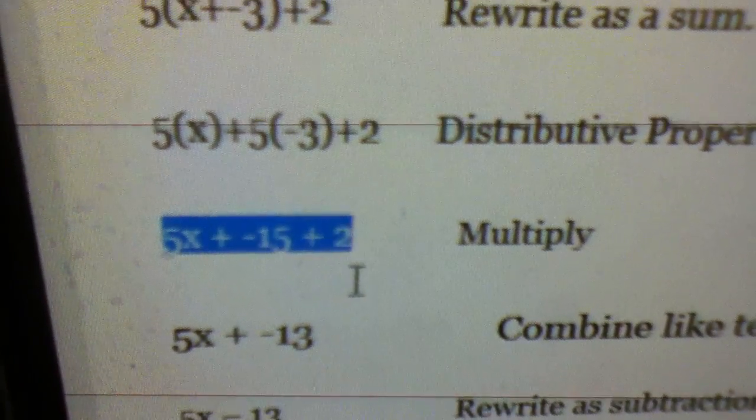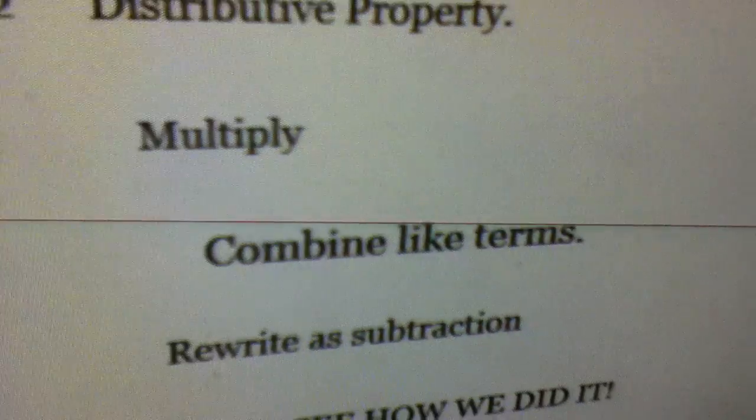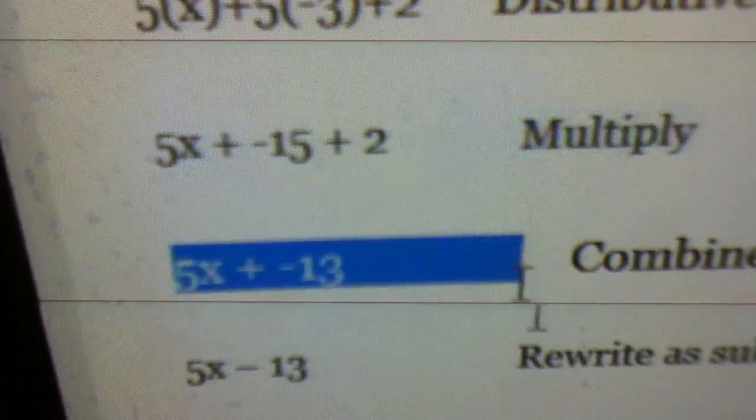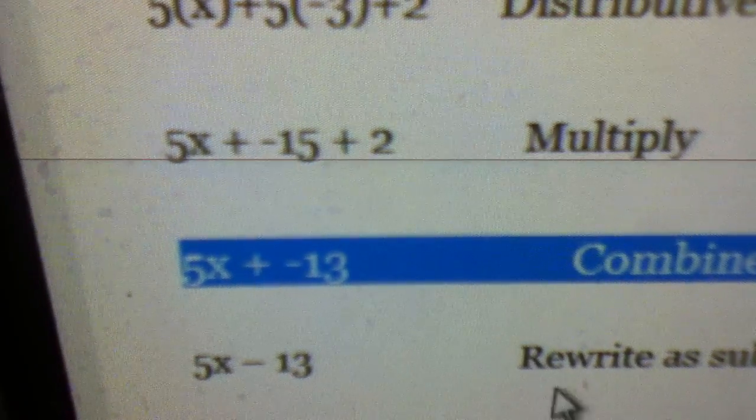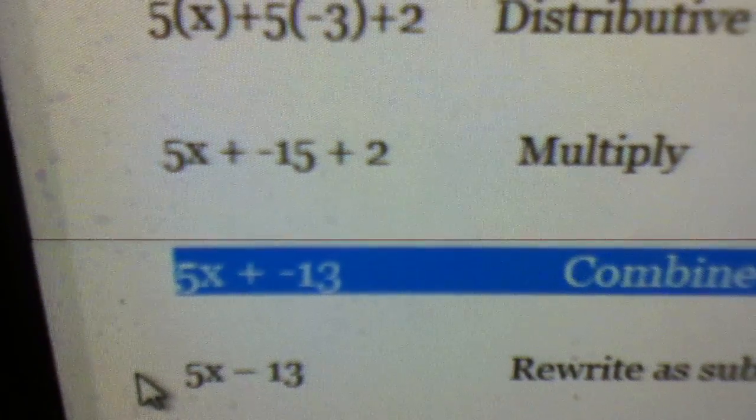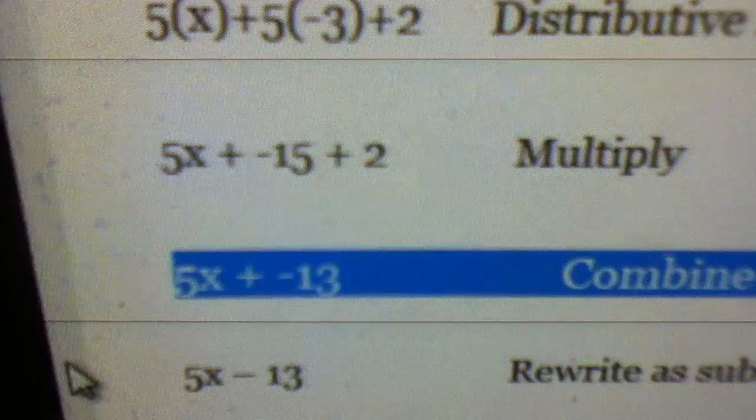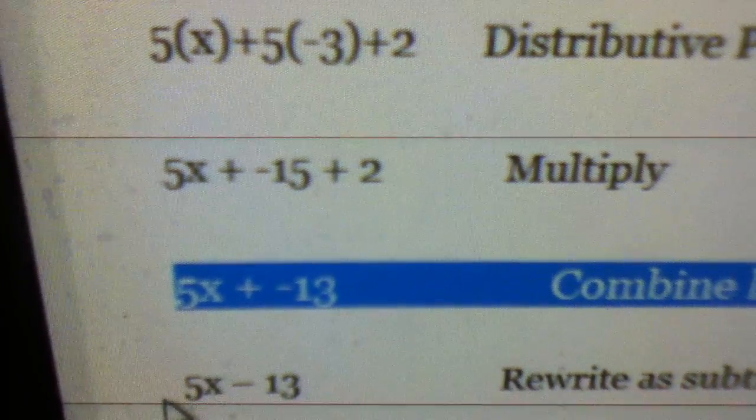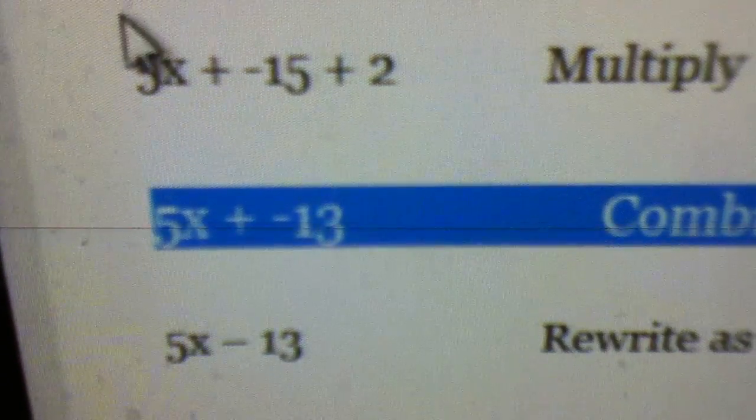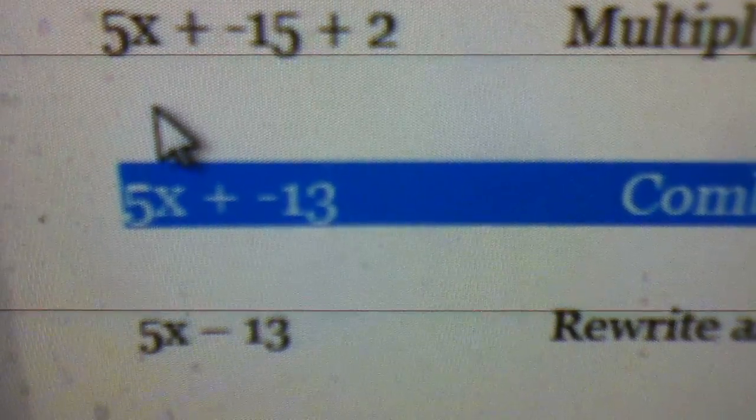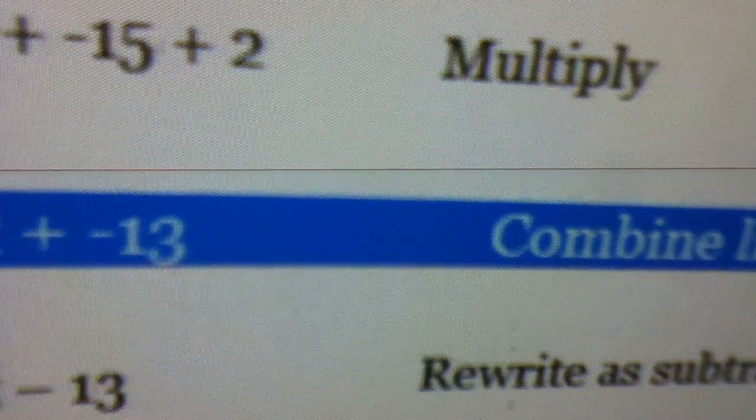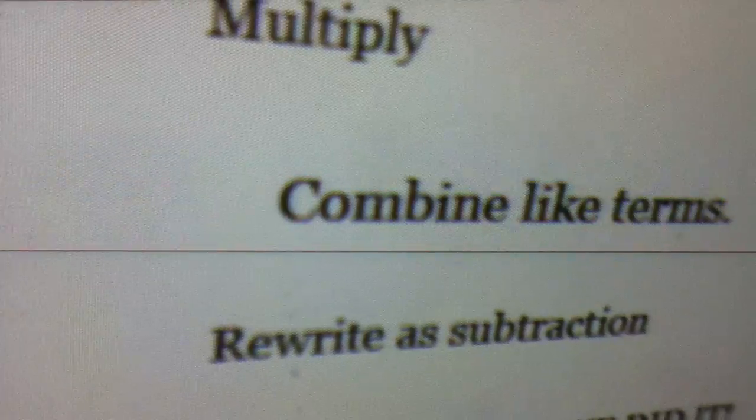Then we combine like terms, so it'd be 5x, because there's no other x's, plus negative 15 plus 2, which is negative 13. Then it would be 5x minus 13. Rewrite as subtraction.